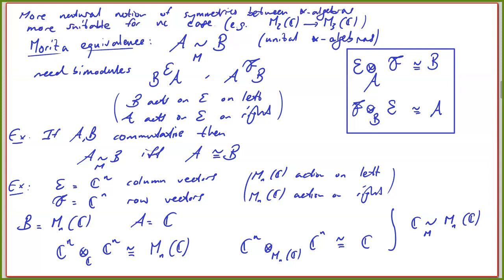So let's see what happens if we kind of move from A to B — given a spectral triple (A, H, D), I want to transfer to a spectral triple on B using this Morita equivalence. The idea is: I'm given the bi-module E between B and A, taken to be finitely generated projective. I take H' = E ⊗_A H — exactly what I just showed to move from representations of A to representations of B.